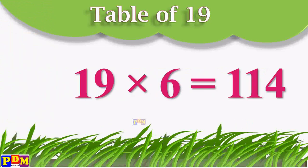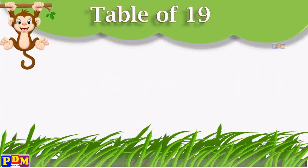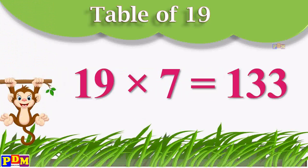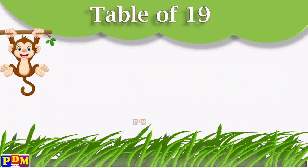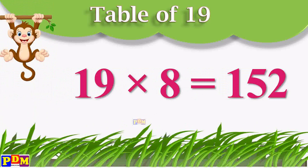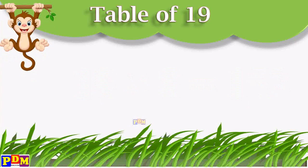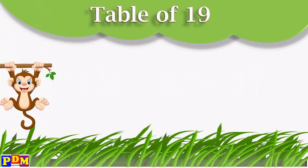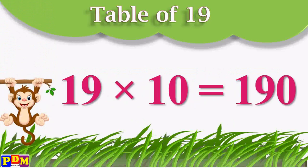19 sixes are 114. 19 sevens are 133. 19 eights are 152. 19 nines are 171. 19 tens are 190.